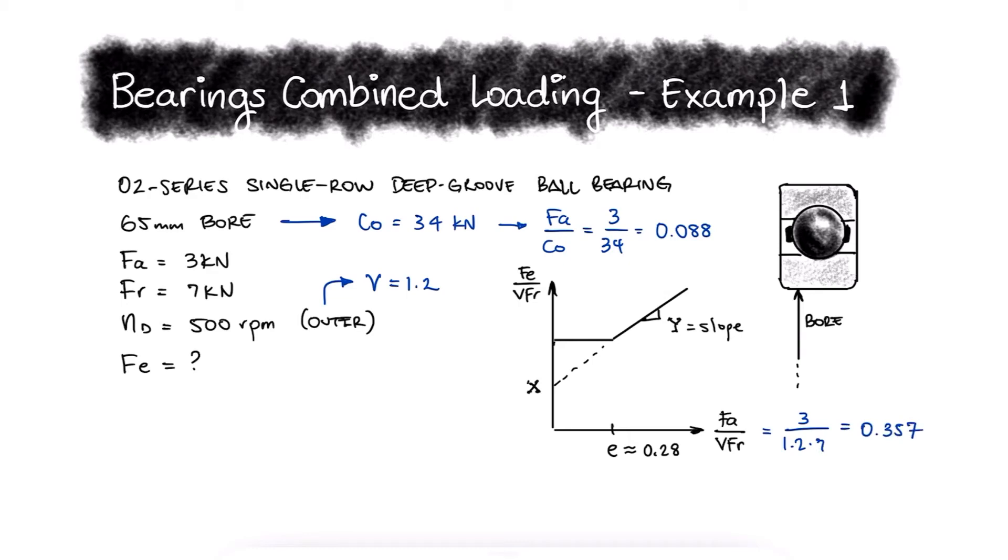Since this value is considerably higher than the abscissa E, we know our operation condition lies on the slanted line.